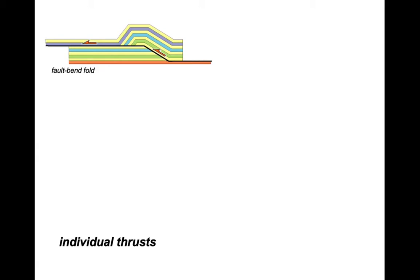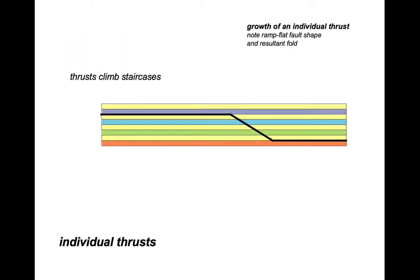So let's start off with the individual thrust structure. We're going to start off with beds horizontal and a thrust that has climbed up through the stratigraphy but has yet to move. The segments of the fault that are parallel to bedding are called flats, and these flats are linked by steeper segments that we call ramps.